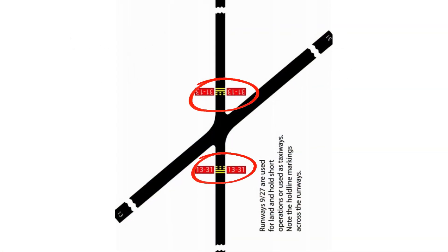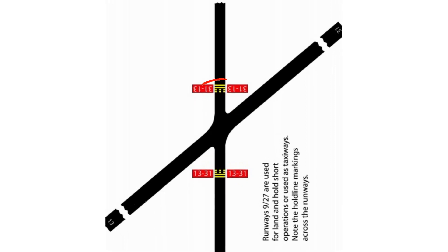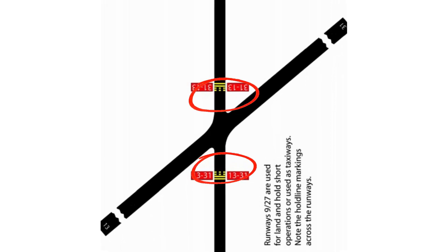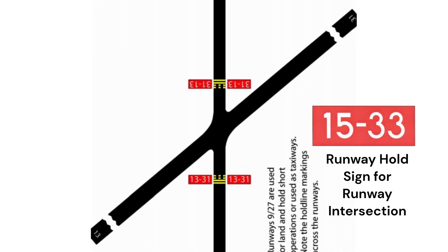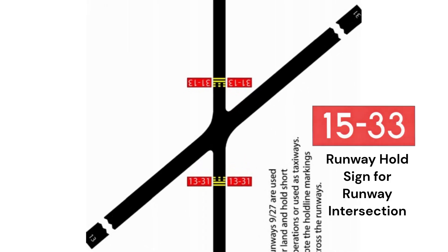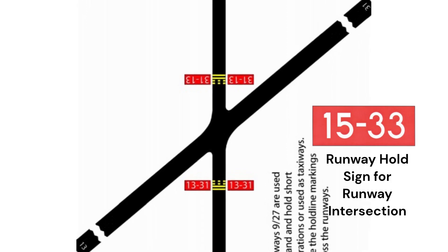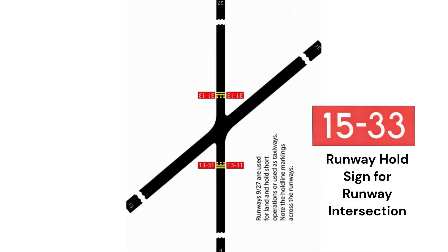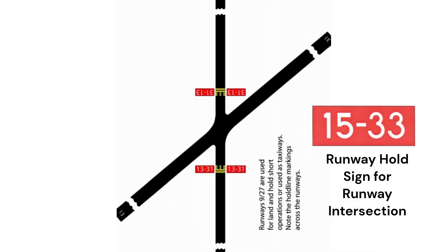When you see the white inscription with the runway numbers on a red background, this indicates a runway holding sign. In this chart, runway 9 and 2-7 intersect runways 1-3 and 3-1.